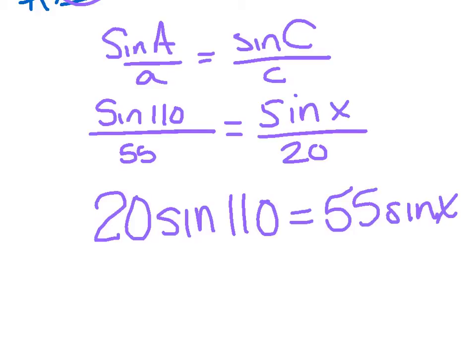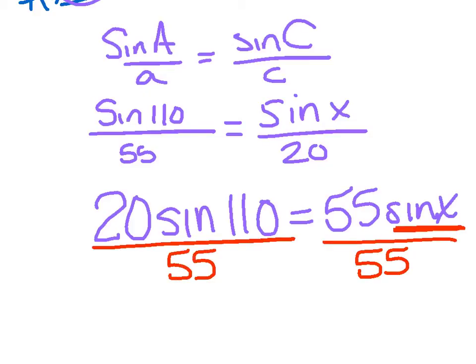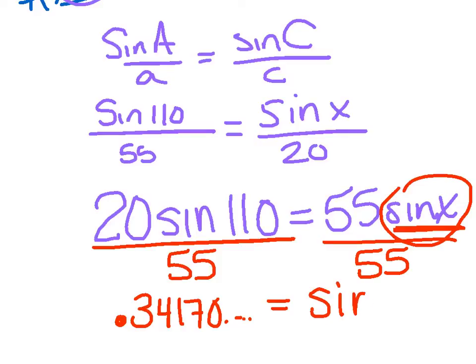Okay, now, I just want to be clear. This sine X is attached together. You can't break it up. So the only thing I can do is divide both sides by 55. So grab your calculator, divide that, and you should get a pretty small decimal every time. I've got .34170, it goes on forever. Now notice, I did not solve for X. What's left over here is the sine of X.